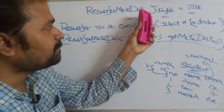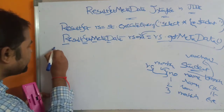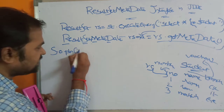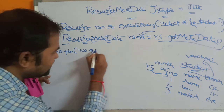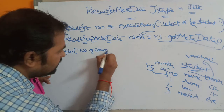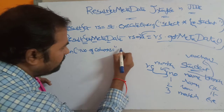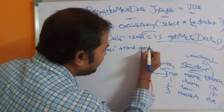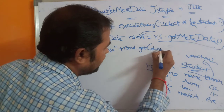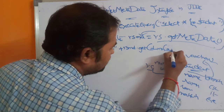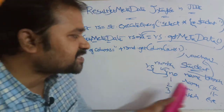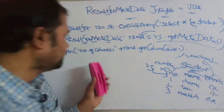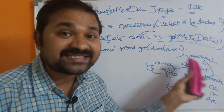ResultSet Metadata mainly contains three methods. The first method is getColumnCount(). We can write: int numberOfColumns = RSMD.getColumnCount(). This returns how many columns are there in the table. In our student table, there are three columns — role number, name, and branch — so the output will be 3.